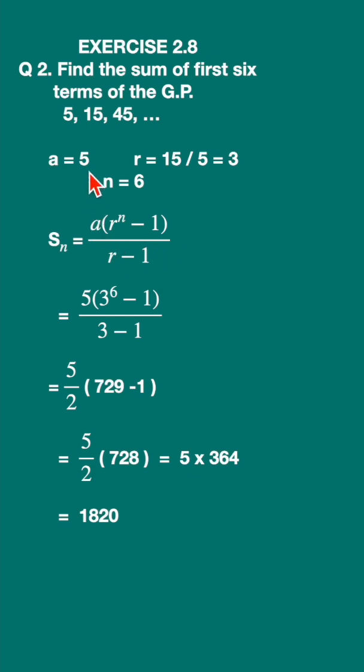Now, you can substitute the values of a and r here in this formula. So, 5 into 3 raised to 6 minus 1 upon 3 minus 1. This is equal to 5 upon 2, 3 minus 1 is 2.